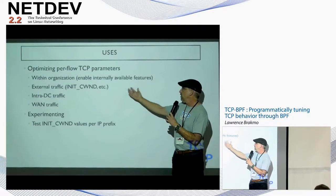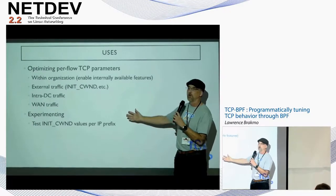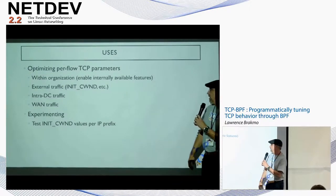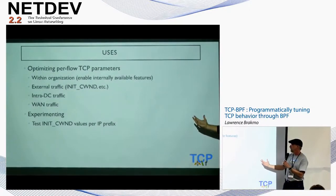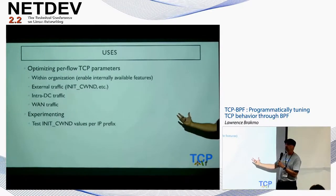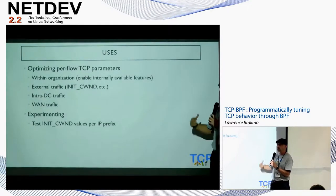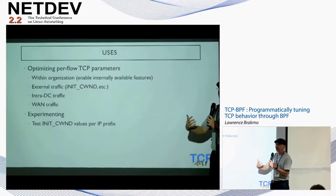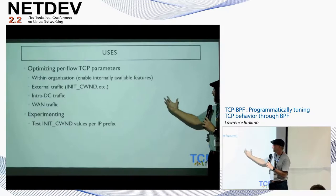For external traffic, we change parameters like initial congestion window. This can also be used for experimenting — with TCP BPF programs we could do experiments where dynamically we learn what the best initial window is based on subnet information. We could also collect information about the performance of the connection to fine-tune it — collect data, analyze it in user space, make decisions — or it could all be done within the kernel.